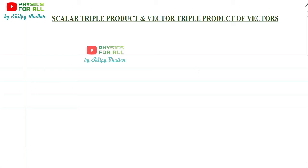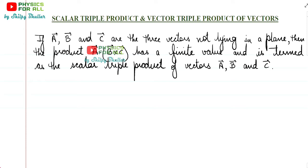Let's start with scalar triple product first. If a, b, and c are three vectors not lying in a plane, then the product a·(b×c) has a finite value and is termed as a scalar triple product of vectors a, b, and c. I have underlined two aspects: first, the three vectors are not necessarily lying in the same plane.